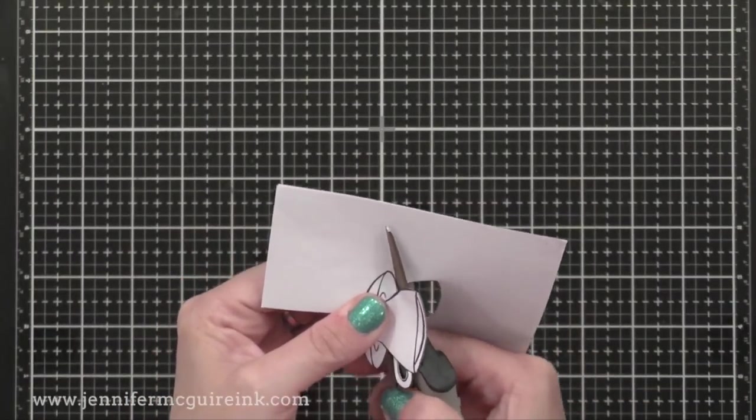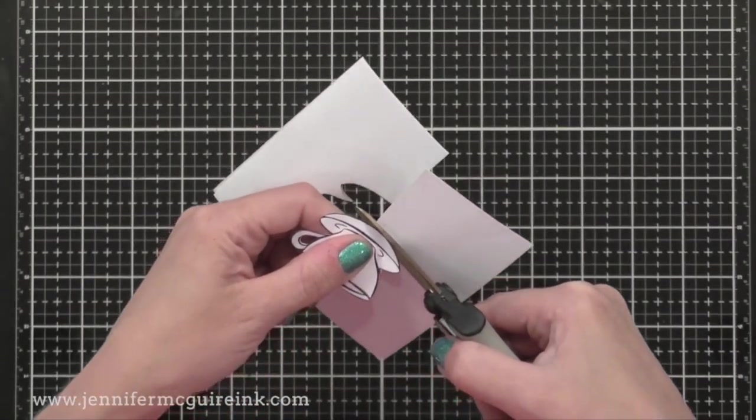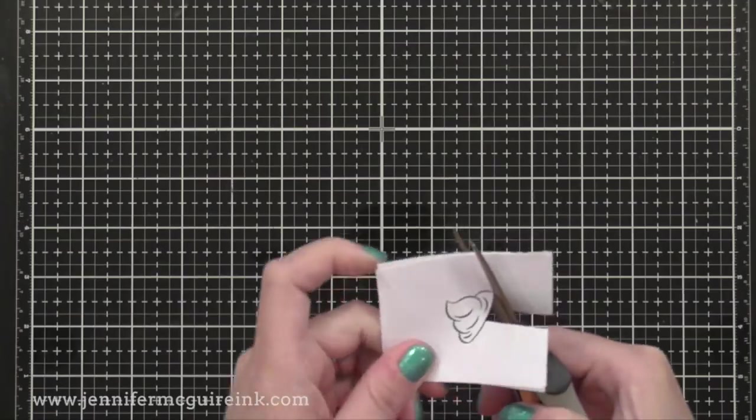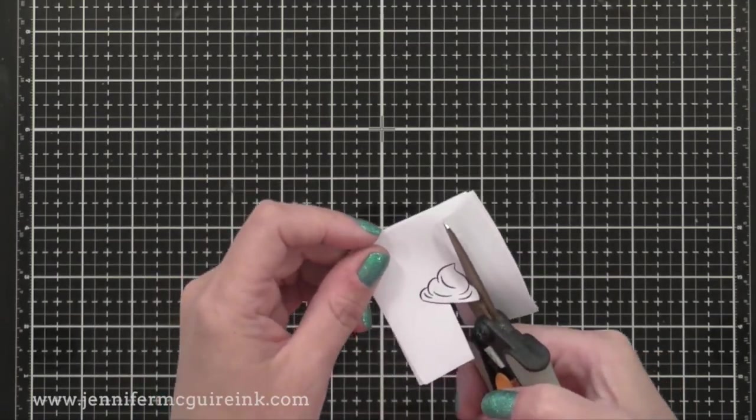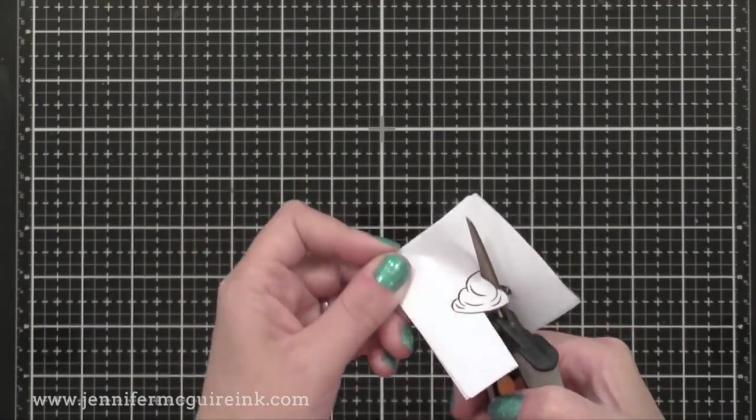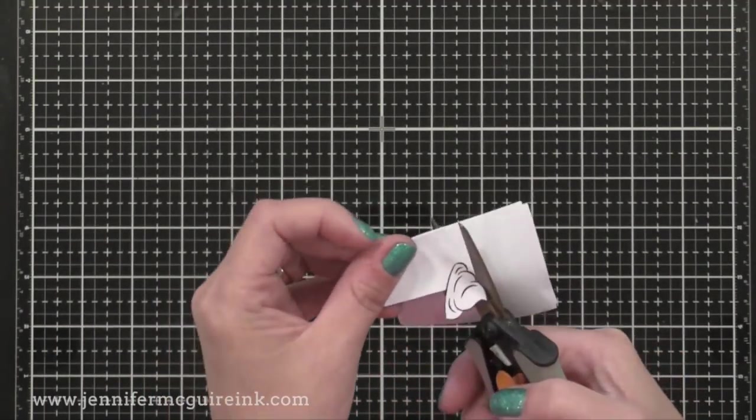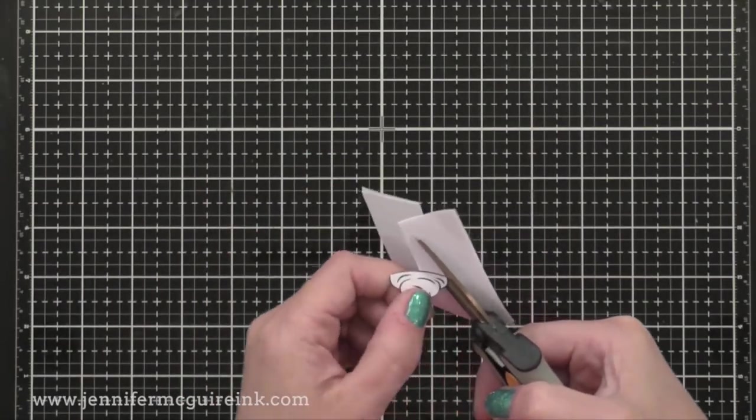So I went ahead and cut out a bunch of these different mugs, and I also have their negative space. These are pretty easy to cut out because they're basic shapes. I even cut out some whipped cream so that we can add that to the top of some of our mugs. Now if you don't like to fussy cut, you can use the coordinating dies for masking, and that video I mentioned that's linked to here shows how to do that.